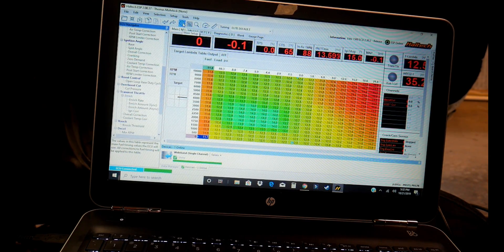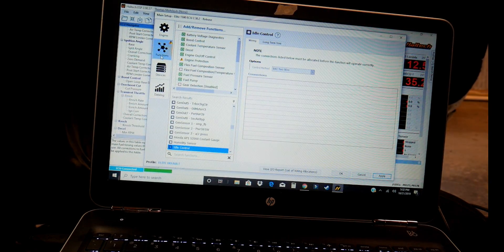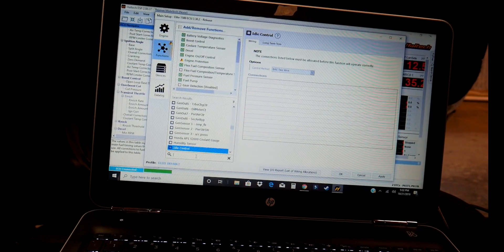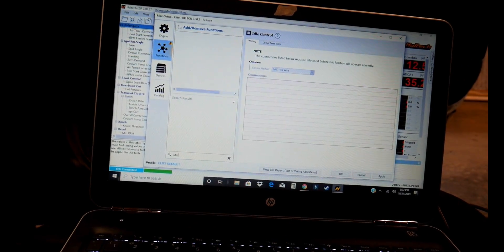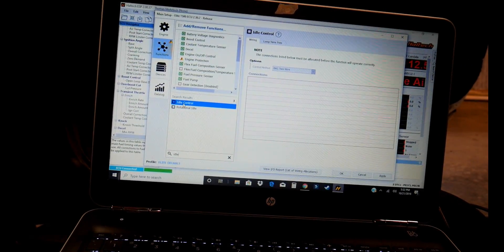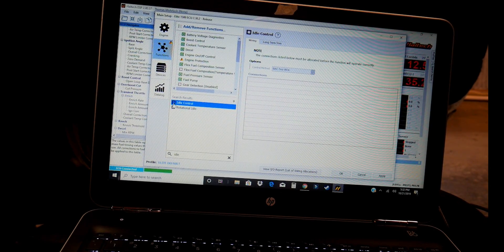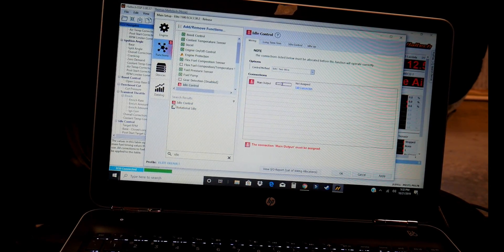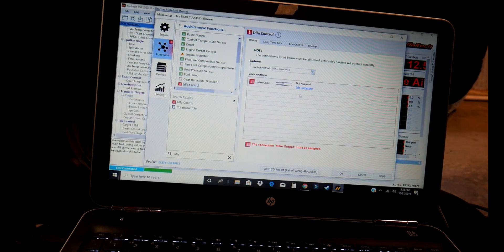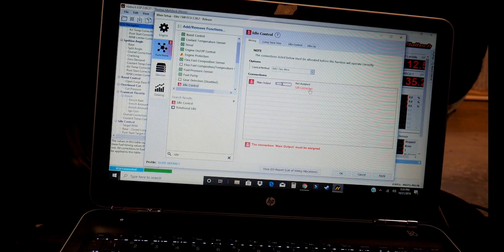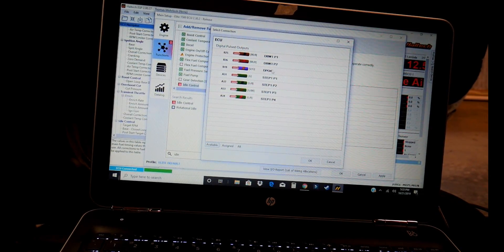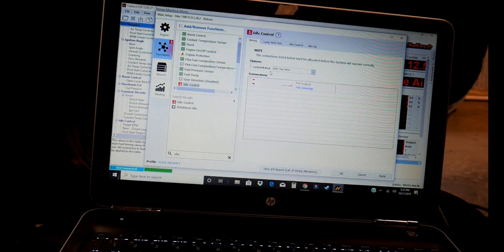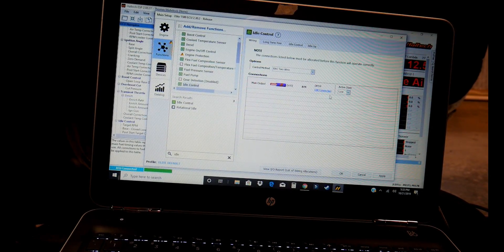First thing we're going to do is we're going to go up to settings. We're going to go to functions. We're going to just type in idle. We're going to find idle control. We're going to check the box to enable that. We need to assign our output. We know that is DPO4. Double click. And we have our connection.